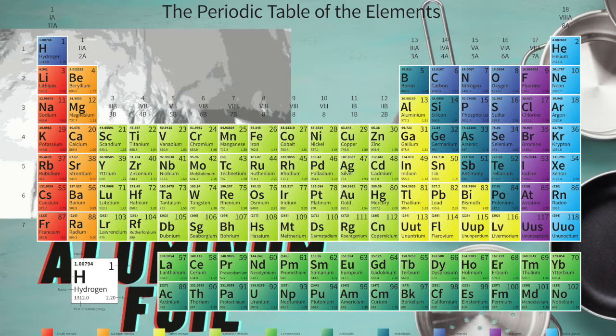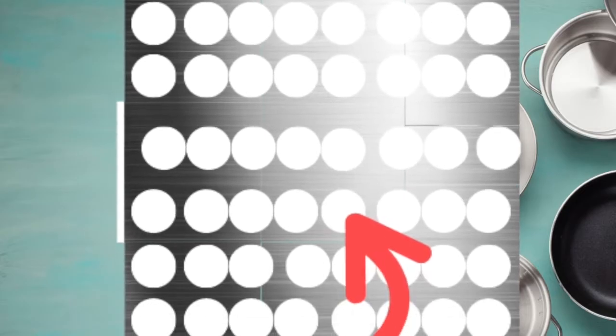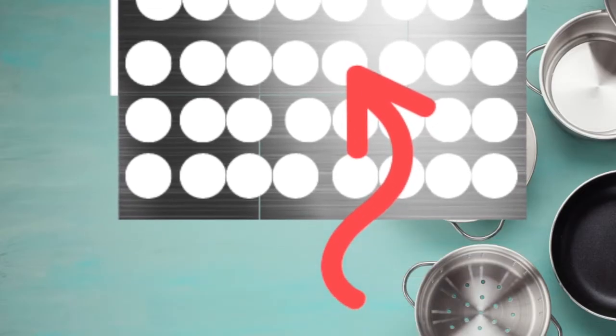Elements are so pure that we even name the individual atoms that make them up after the elements. Other examples of elements are materials like gold, oxygen, carbon, neon, and mercury. The interesting thing about these materials is that they can't be broken down or simplified any further. That's because no matter where you look in that material, you'll find the same kind of atom.